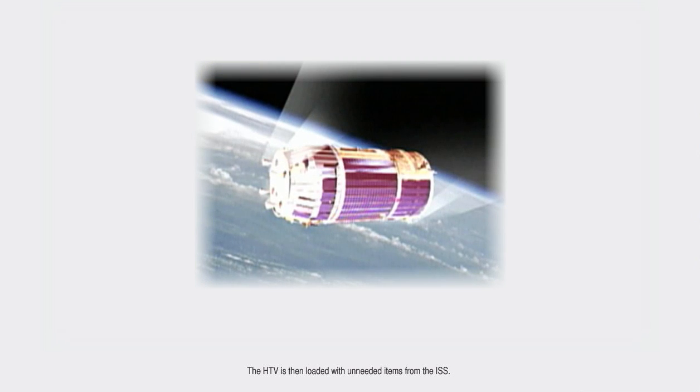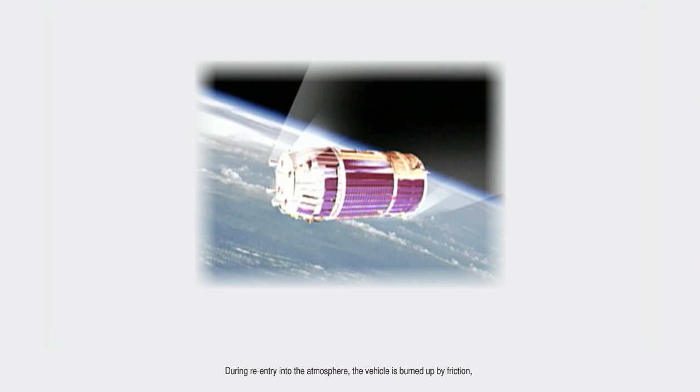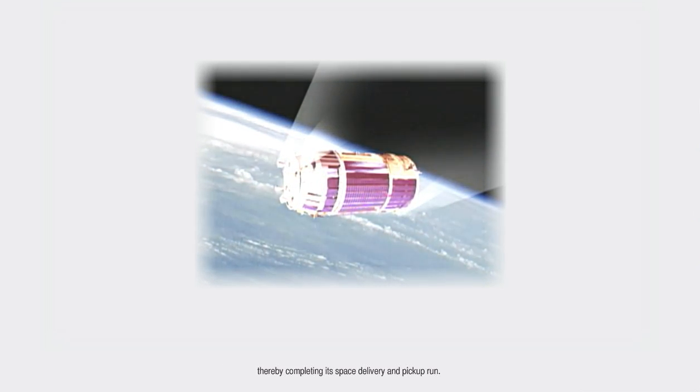The HTV is then loaded with unneeded items from the ISS. During re-entry into the atmosphere, the vehicle is burned up by friction, thereby completing its space delivery and pickup run.